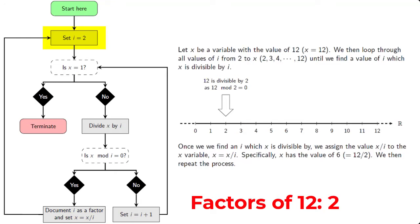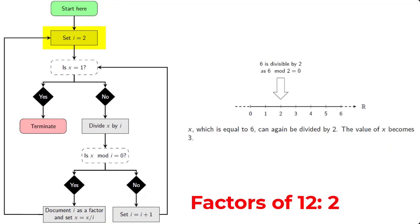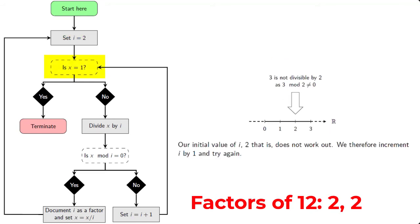Then we loop back to the top of the flowchart and we set i equal to 2. Now back at the top, we ask ourselves, is x equal to 1? And that's not the case. x is equal to 6. We then divide x by i, or we divide 6 by 2 again. Is 6 mod 2 equal to 0? And the answer is yes. So we found yet another factor of x. And we loop back to i equal to 2. We ask ourselves, is x equal to 1? And again, that is not the case. x is equal to 3.